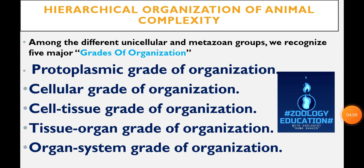Subheadings are also here in our minor category: hierarchical organization of animal complexity. Among the different unicellular and metazoan groups, we recognize five major grades of organization: number one, protoplasmic grade; number two, cellular grade; number three, cell-tissue grade; number four, tissue-organ grade; number five, organ-system grade of organization.